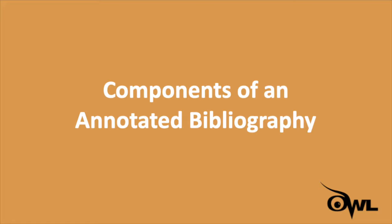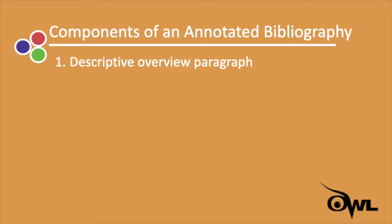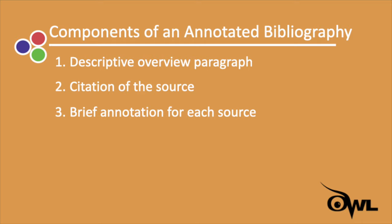So, how do you put together an annotated bibliography? Generally, an annotated bibliography consists of three major components. First, there's the descriptive paragraph that appears at the beginning of your annotated bibliography and provides a brief overview for the scope of your project — though as we'll discuss in a moment, this is sometimes optional. Second, each entry will begin with the source's citation, following whatever citation format you are using, whether that's MLA, APA, Chicago, or another style. Third, you will write a brief annotation for each source that follows the corresponding citation, usually no longer than a paragraph.